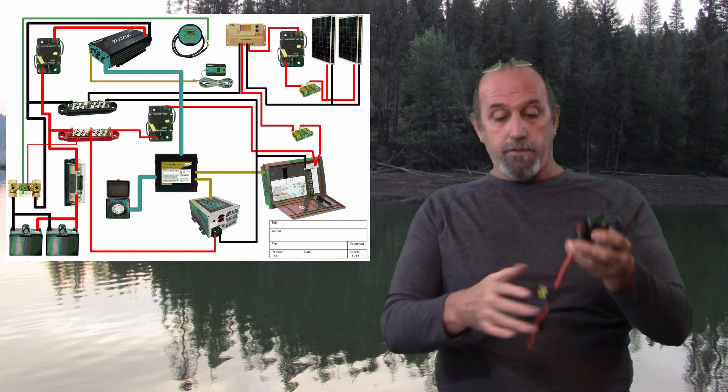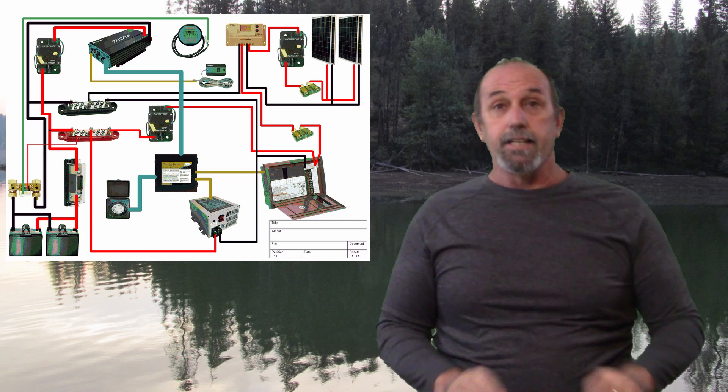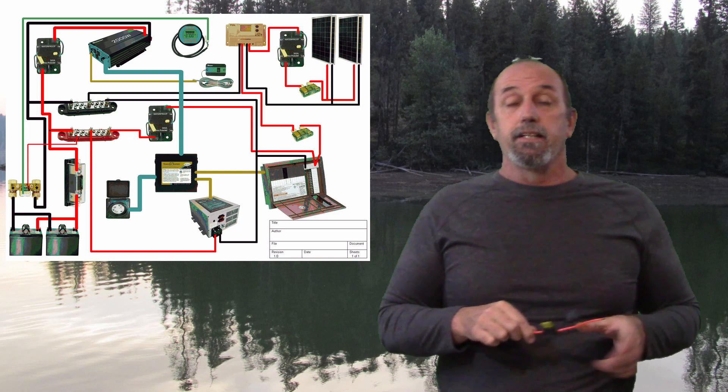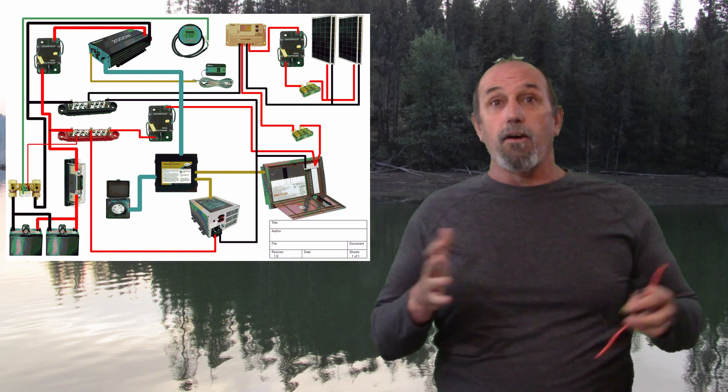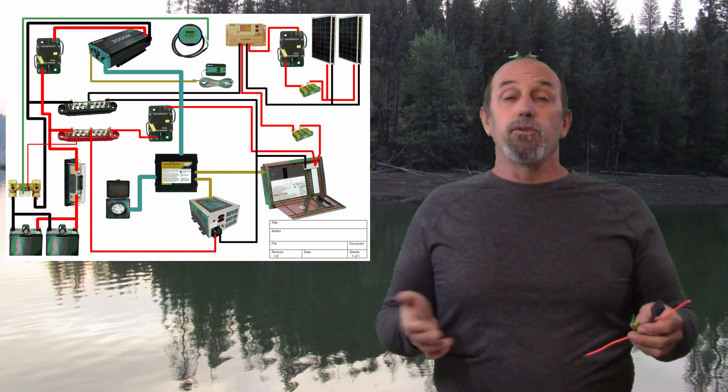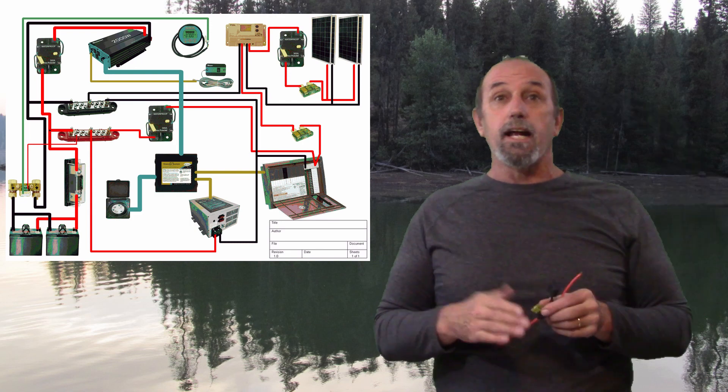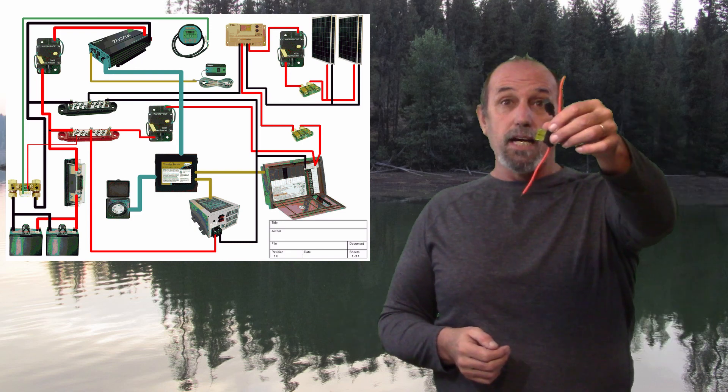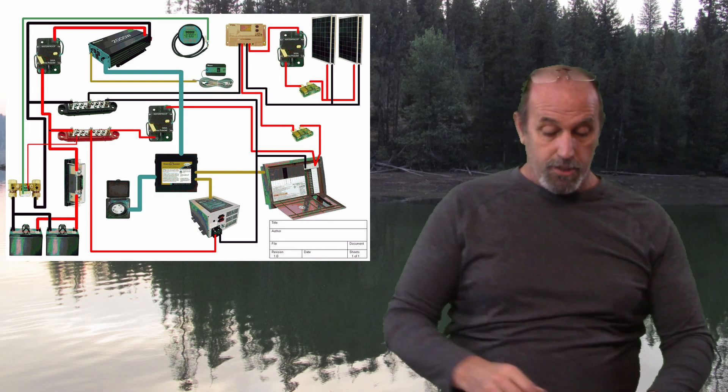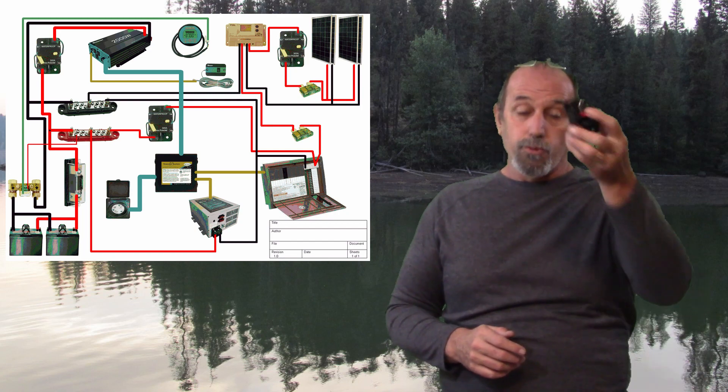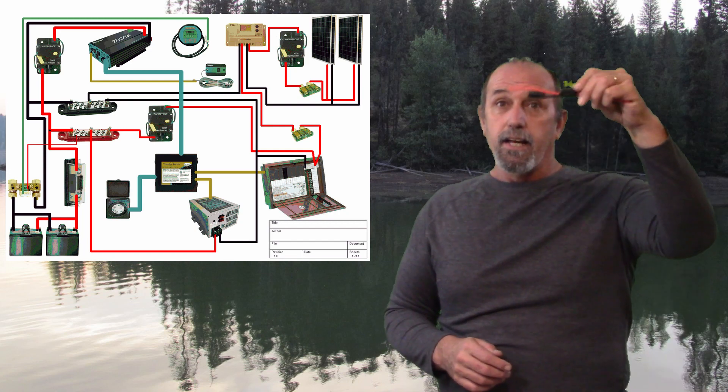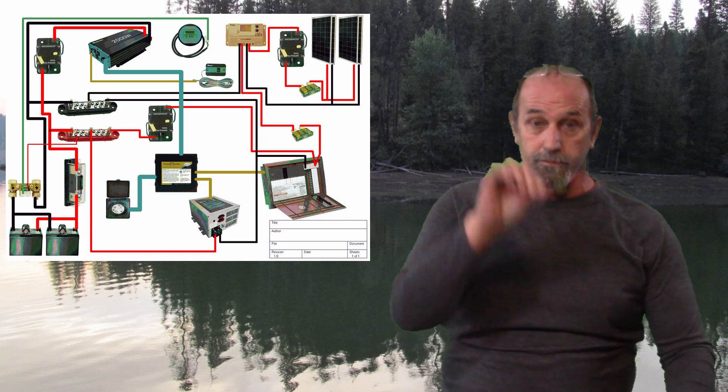That way, if I do have the over amperage, it'll pop. And then on the other side, it wants a 30 amp fuse going from the controller out to the batteries. So I've got that. So that's where the two resettable breakers are going to be, and then some inline fuses.